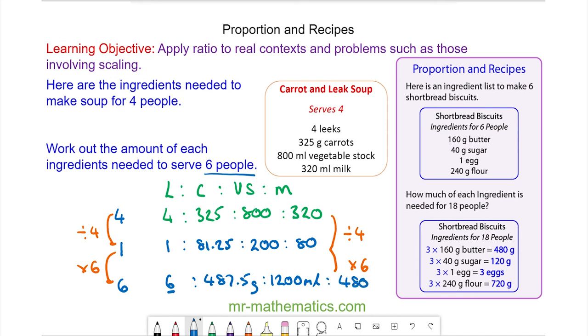That's 480 milliliters for six people. So these are the ingredients needed for this recipe for six people. Thank you for watching and I hope you found that useful. Take care.